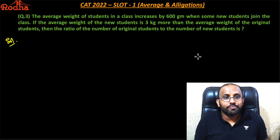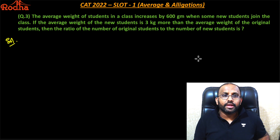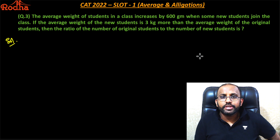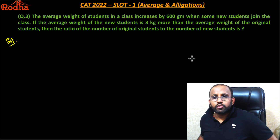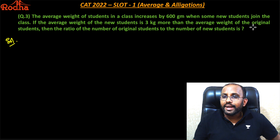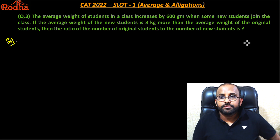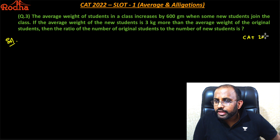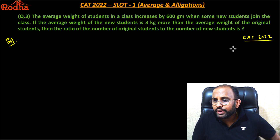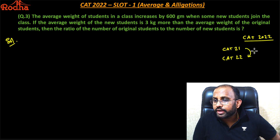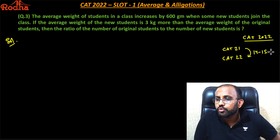Hi everyone. Let's look at this question from CAT 2022 slot 1 — Average and Allegations. It's a fairly doable question. What I wanted to show you through all these questions is that CAT 22 was difficult. Many people said that, and if you compare CAT 21 to CAT 22, it's almost 14 to 15 marks difference for the 99 percentile.